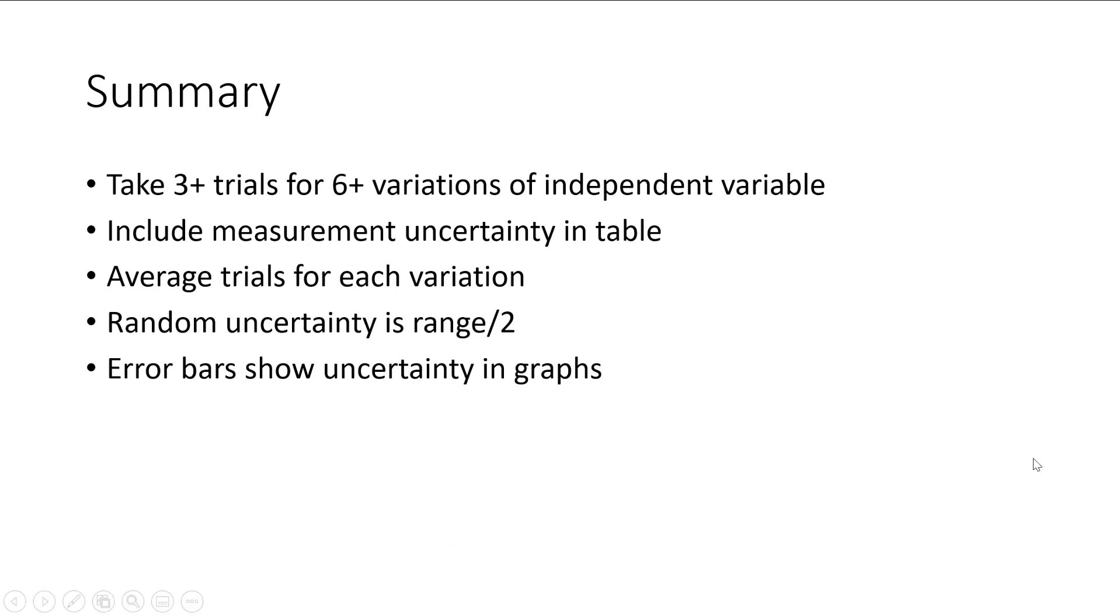So in summary, we need at least six variations and three trials each in an experiment. We have to include our measurement uncertainty in our table headings. We need to average our trials for each variation, and then we can take the uncertainty as the range of values divided by two. And we want to include error bars in our graphs. That's all. I hope that was helpful.